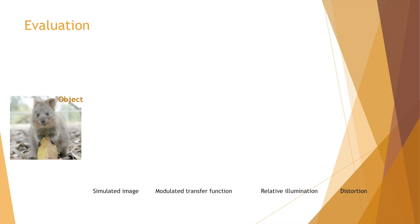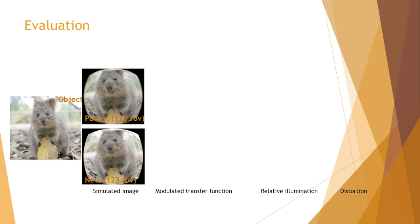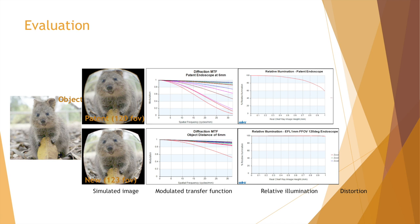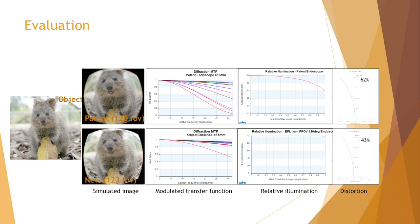Here is a comparison between the patent lens and the new lens design. With the patent lens having a 120-degree full field of view, the new lens achieves 123 degrees. At the same number of line pairs per millimeter, contrast improves significantly. The relative illumination remains uniform across the entire field for the new lens, while for the old lens the brightness drops quickly starting from the half-field point. The new lens also has much less distortion, which is very beneficial for accurately locating lesions with higher resolution and more brightness across the whole field.